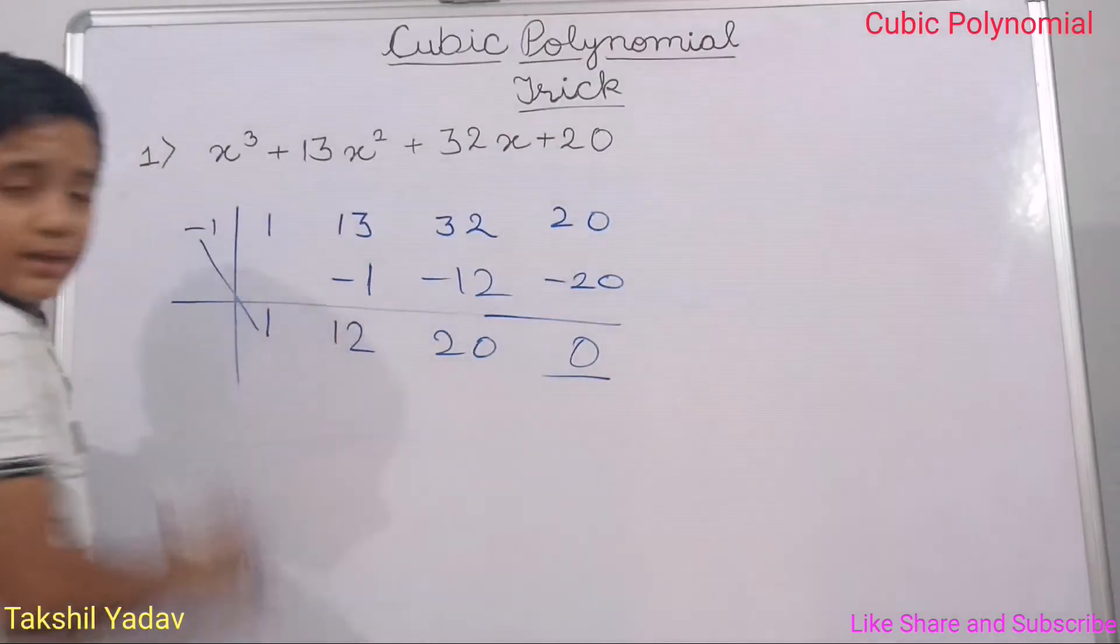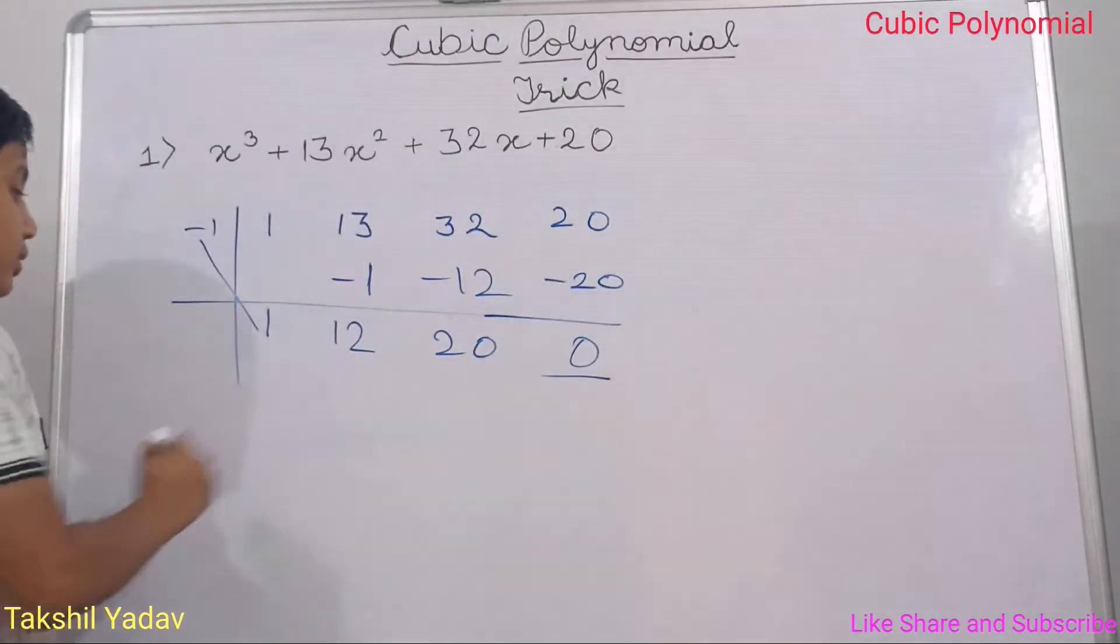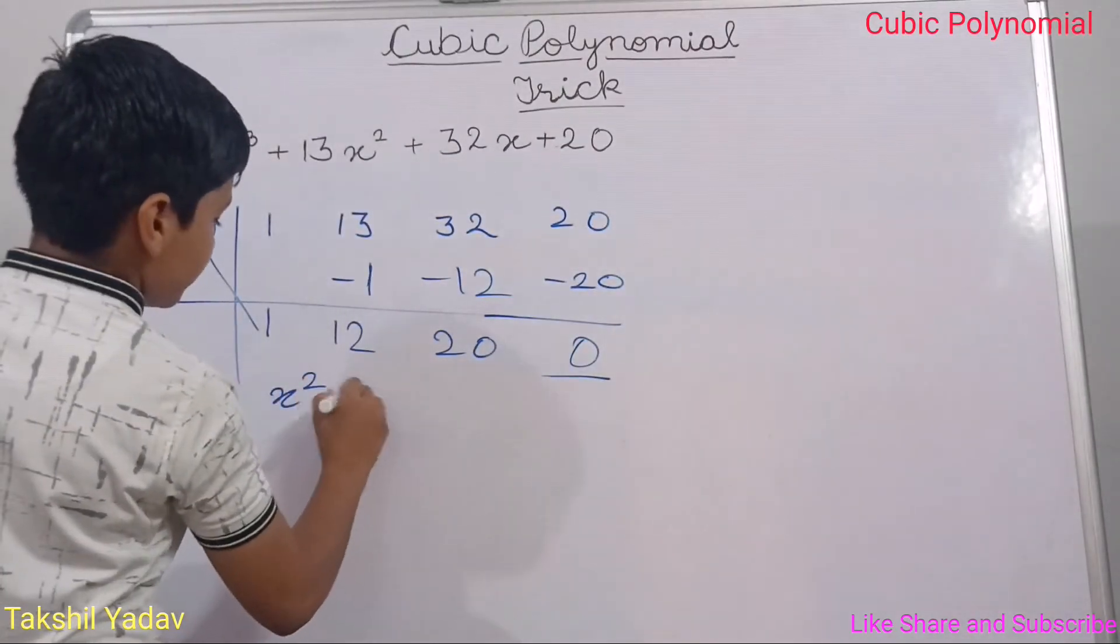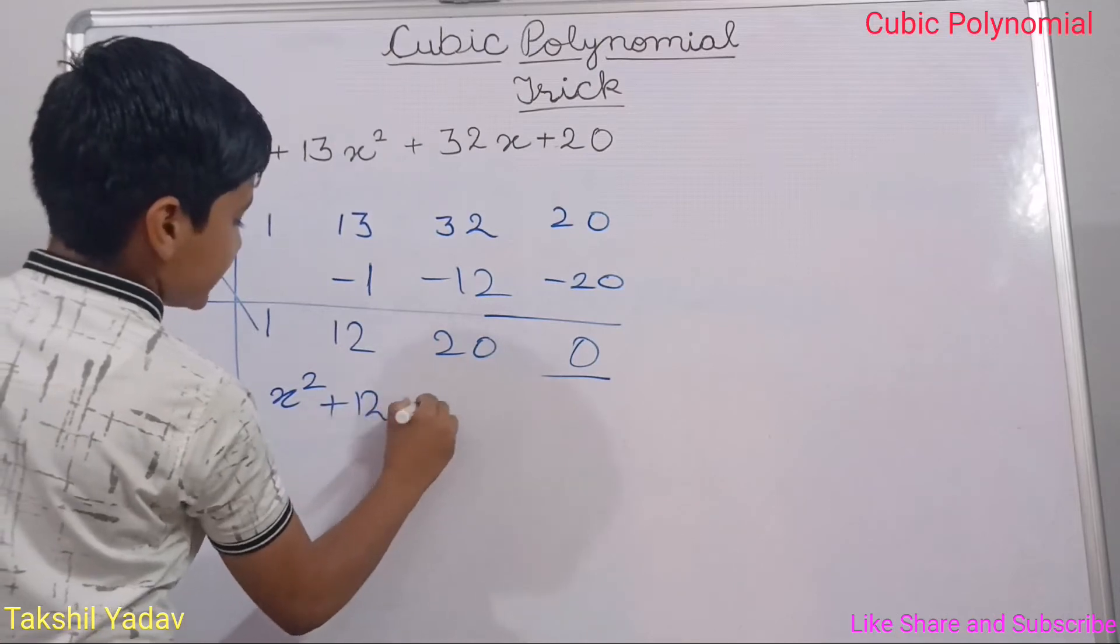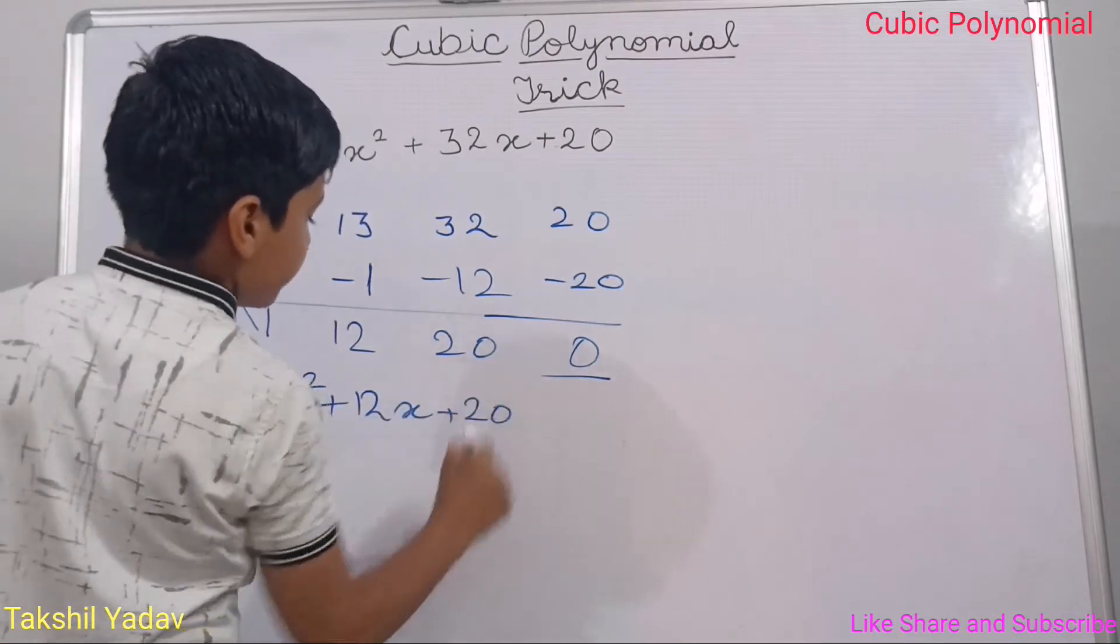Take a look, and this becomes a quadratic polynomial. Here, it is x² + 12x + 20.